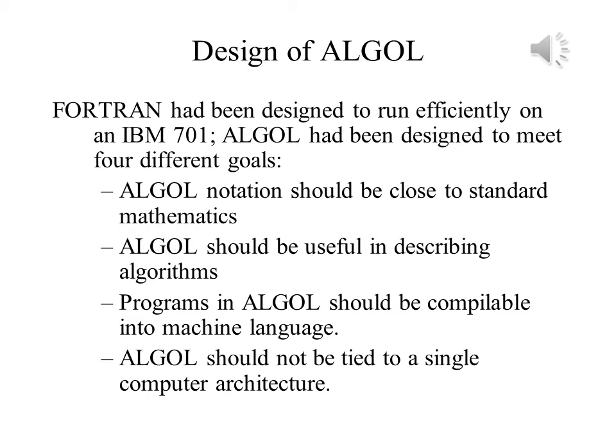ALGOL programs had to be compilable. This was essential because if they couldn't be translated into something that ran on a computer, the language would be useless — a challenge in 1958 when most of what we know about automated translation was still unknown. ALGOL should also not have been tied to a single computer architecture. FORTRAN was heavily tied to the IBM 704, which influenced the design of several statements. By decoupling the language from the hardware, it gave both the language designer and computer architect more freedom in future design work.